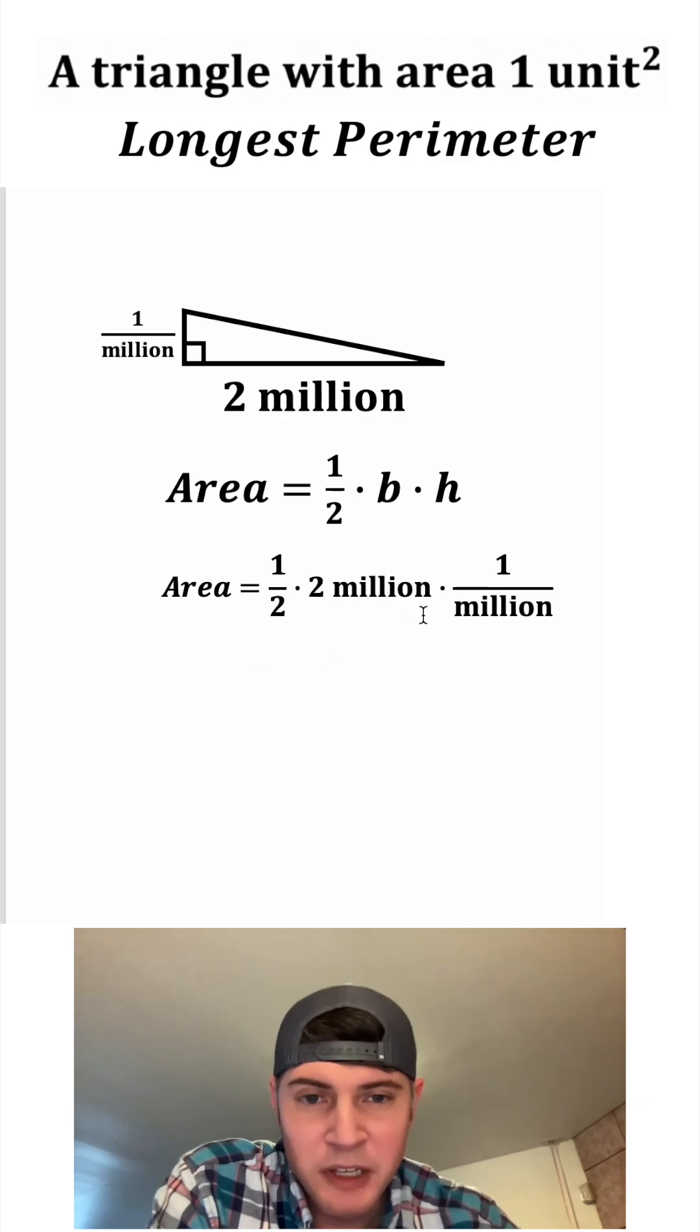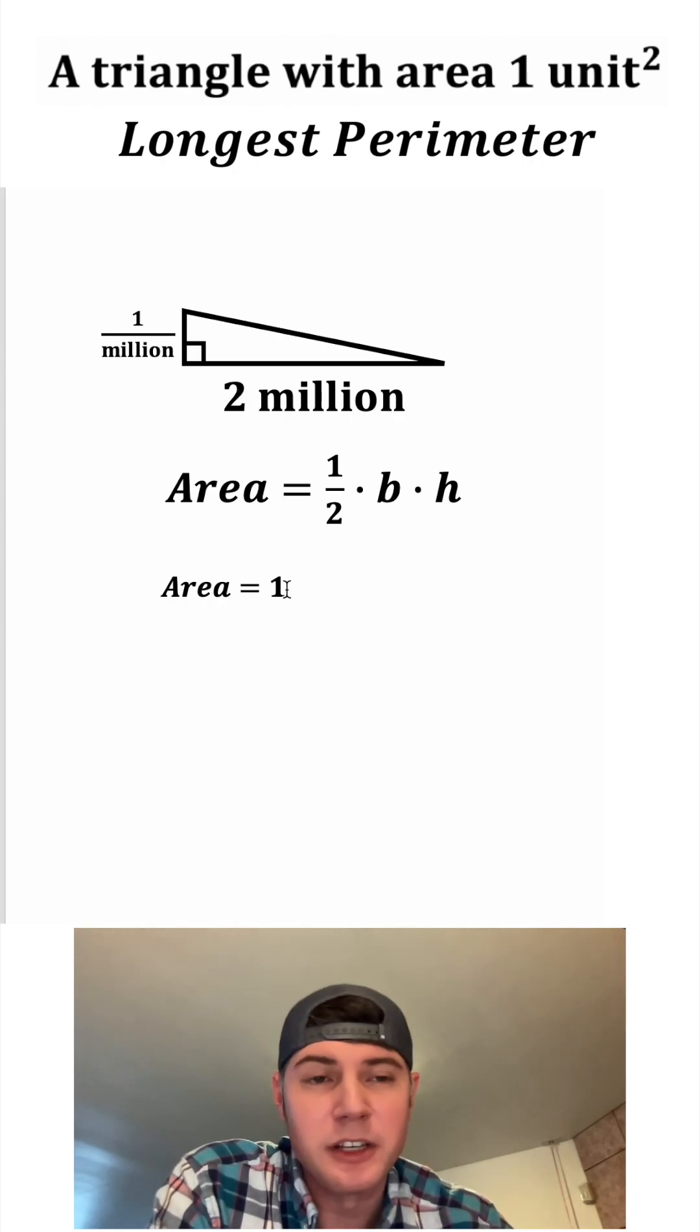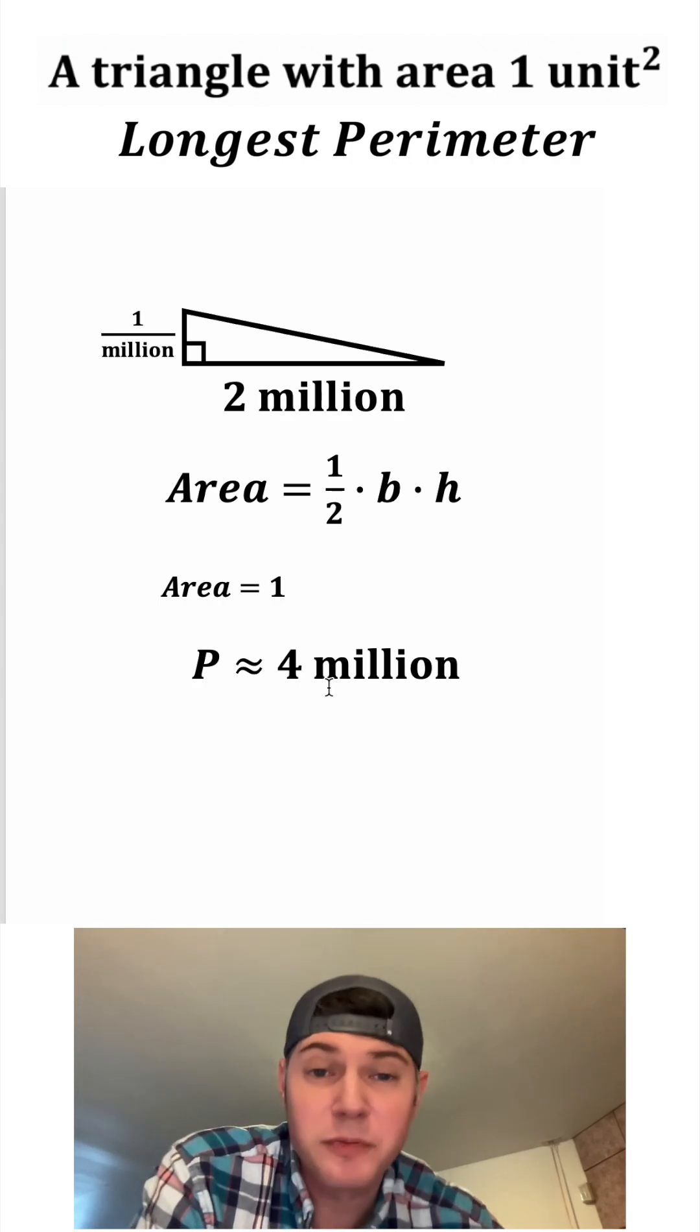Now let's figure out what this area is. This million and this million will cancel. So we just have one half times two and one half times two is one. So the area of this triangle is one. Perimeter of this particular triangle is gonna be very close to four million. So that's pretty large.